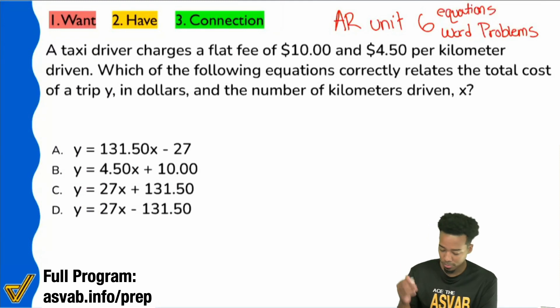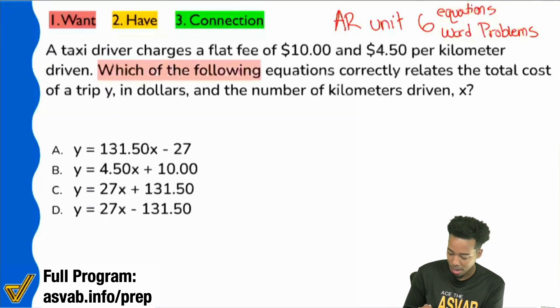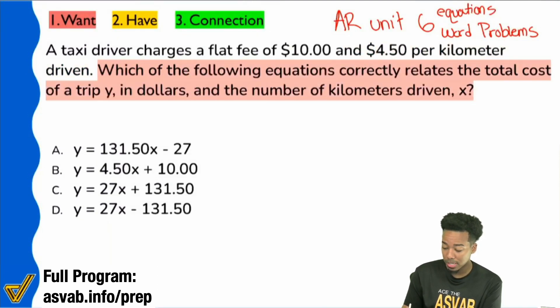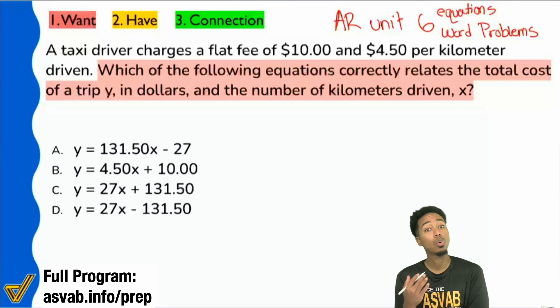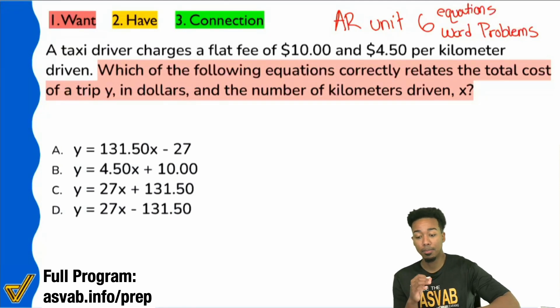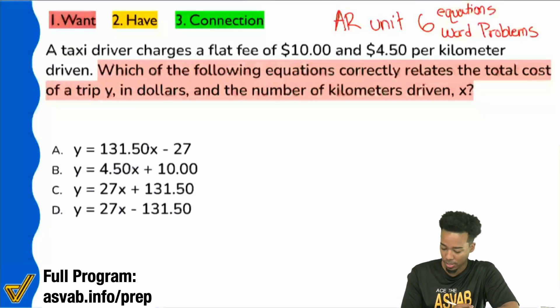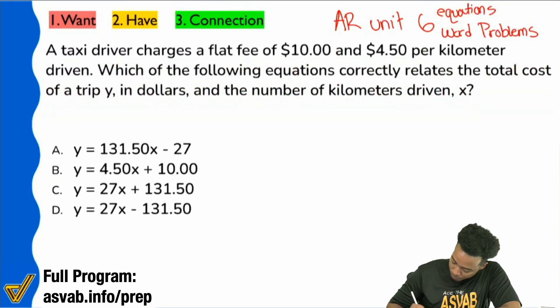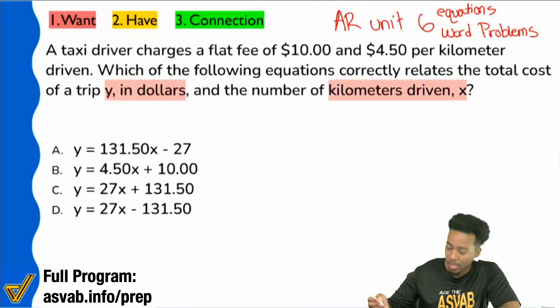So step one, right here, read the question sentence. It says which of the following equations correctly relates the total cost of a trip, y in dollars, and the number of kilometers driven x? This is a really big piece of information right here.